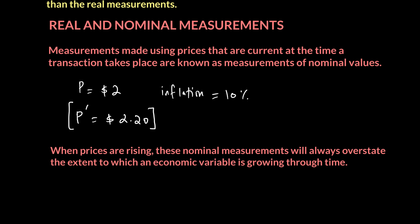Real measurement says: let's keep prices constant and figure out whether you're actually buying more or not. If I keep prices constant — meaning I ignore inflation — you are still buying the same quantity, probably one unit. Nominal measurement will tell you the value has gone up, but you can't tell whether that's because the price went up or because the quantity went up.